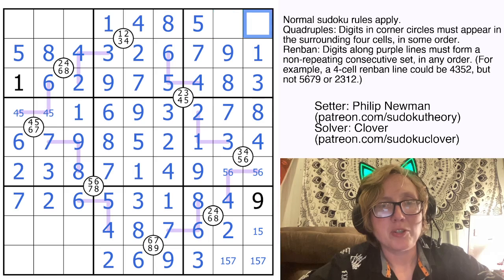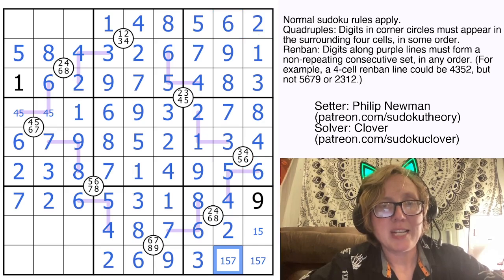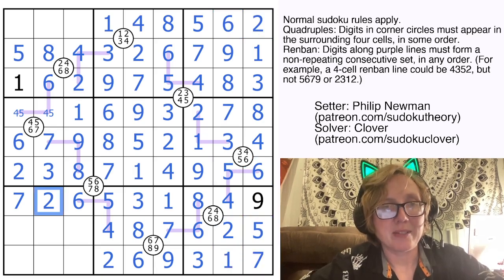Now here, we need to place a 2 and a 6. And because we already have a 2 in column 8, they'll go this way around. And that should finish the entire right-hand side of the grid.